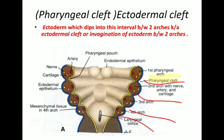Now what is the endodermal pouch? The yellow one is the endodermal lining of the pharyngeal arch and it is evaginating outward at multiple points. These are the endodermal pouches. So evagination of the endodermal lining of the pharyngeal arch forms the endodermal pouch or the pharyngeal pouch. Dipping of the ectoderm is the pharyngeal cleft or branchial cleft, and evagination of the endodermal lining is called the pharyngeal pouch.